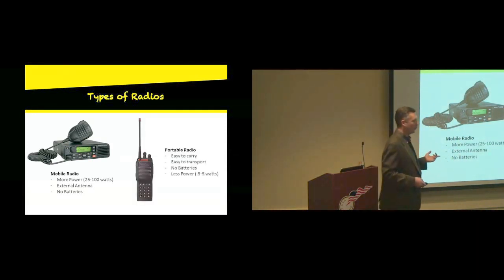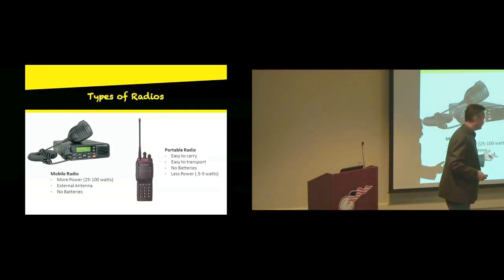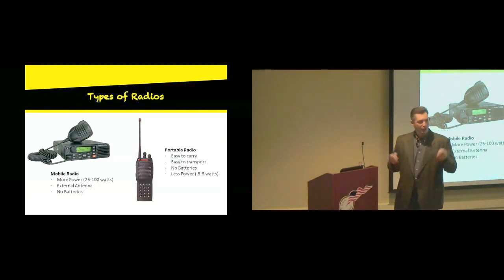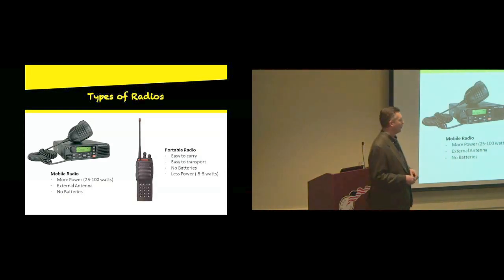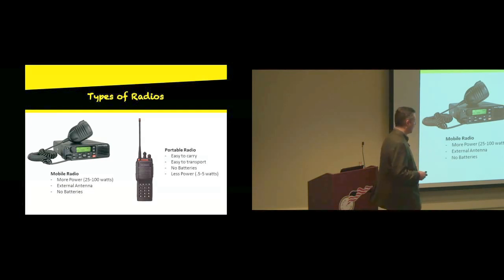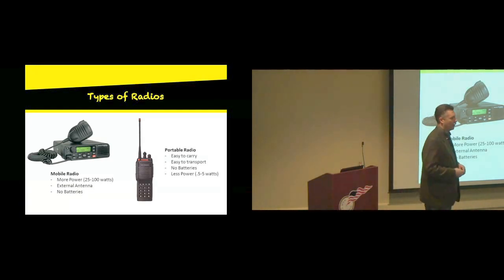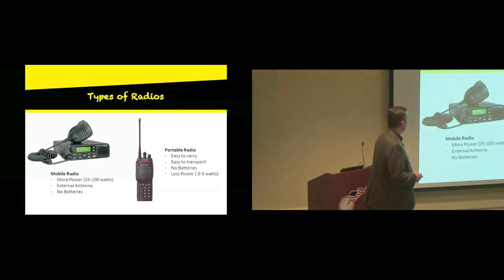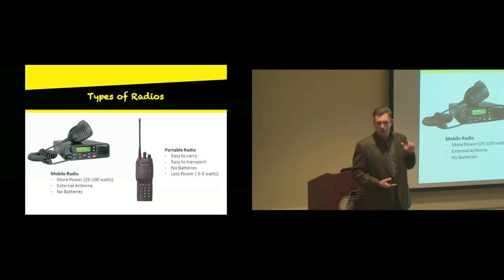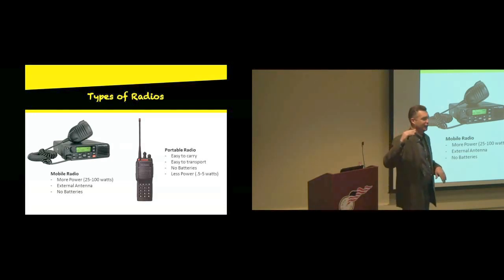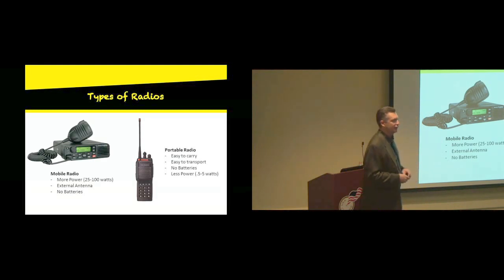This is what we call a portable or a handheld. Really easy to carry — open up the case, throw one to all your officials at the start of the race, easy to move around. They do have batteries, but they're a lot less powerful. Look at the little antenna there that's four or five inches long versus the three-foot antenna on top of the car — that's going to play a big difference when we talk about how you can hear each other at bike races.